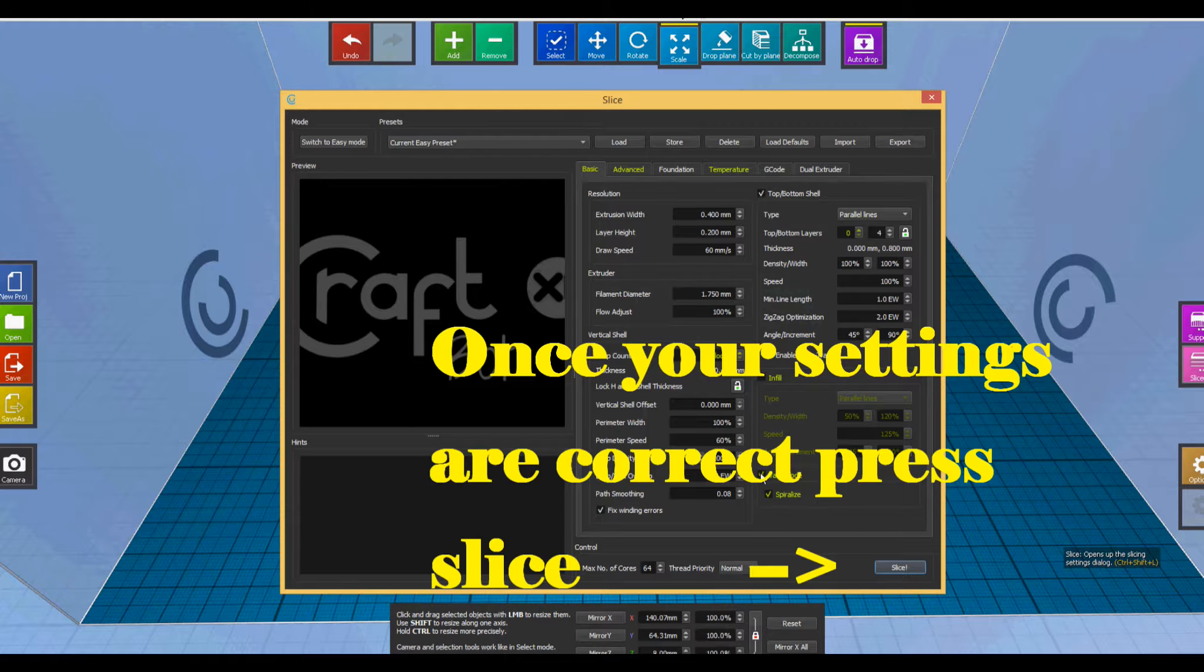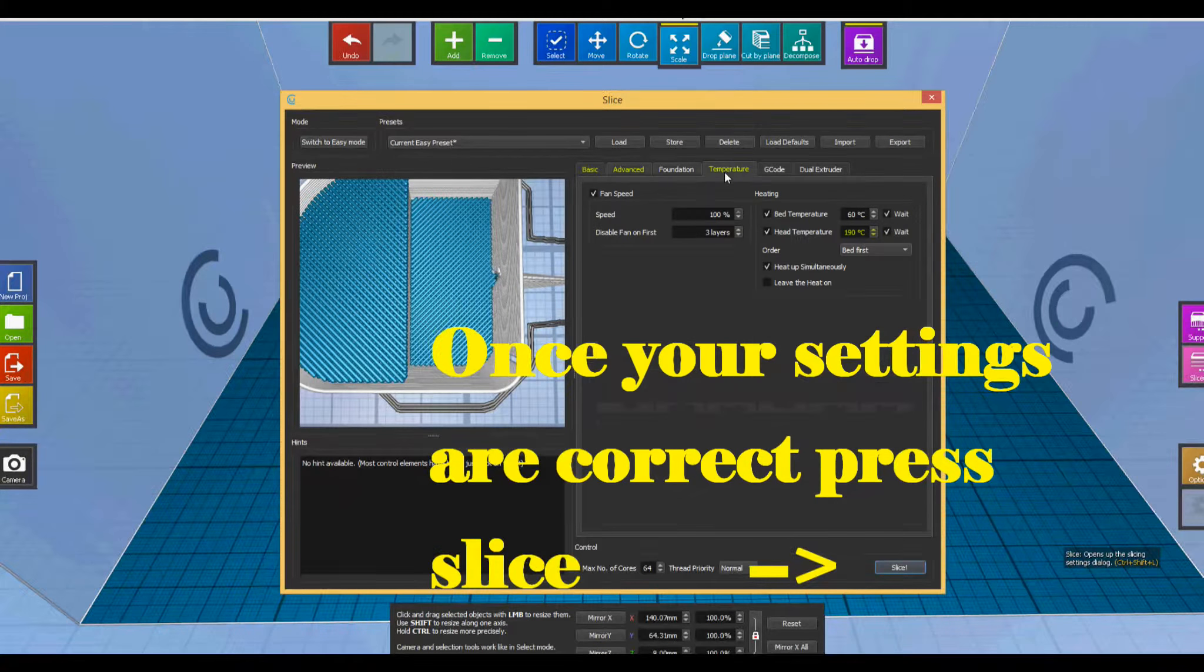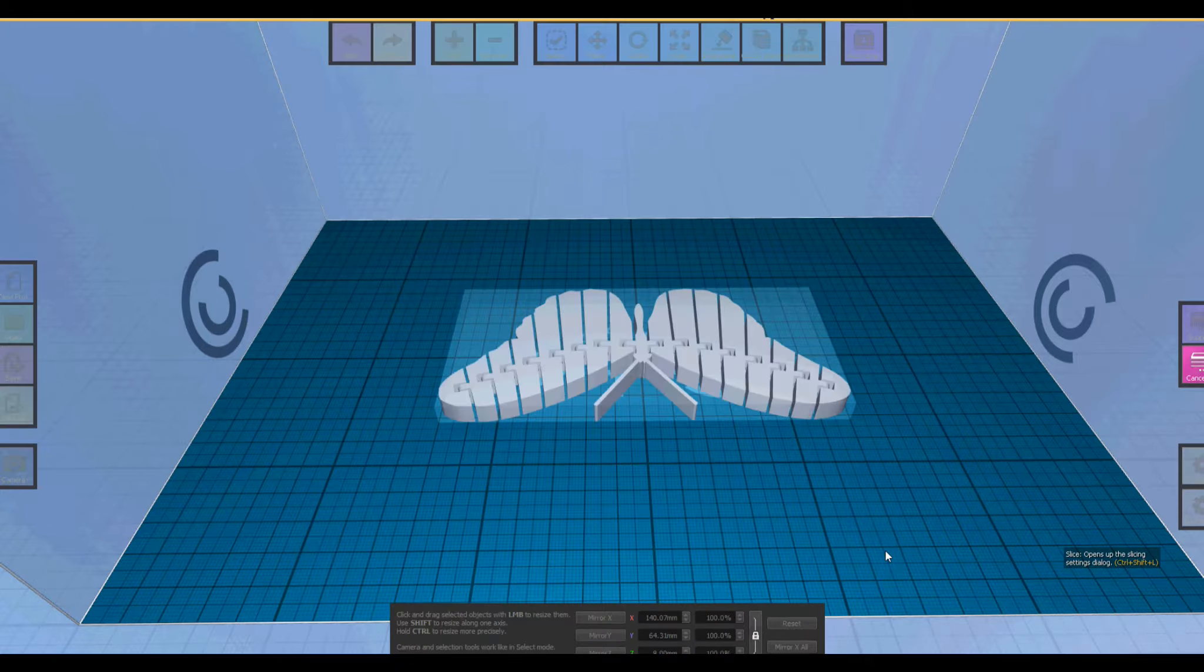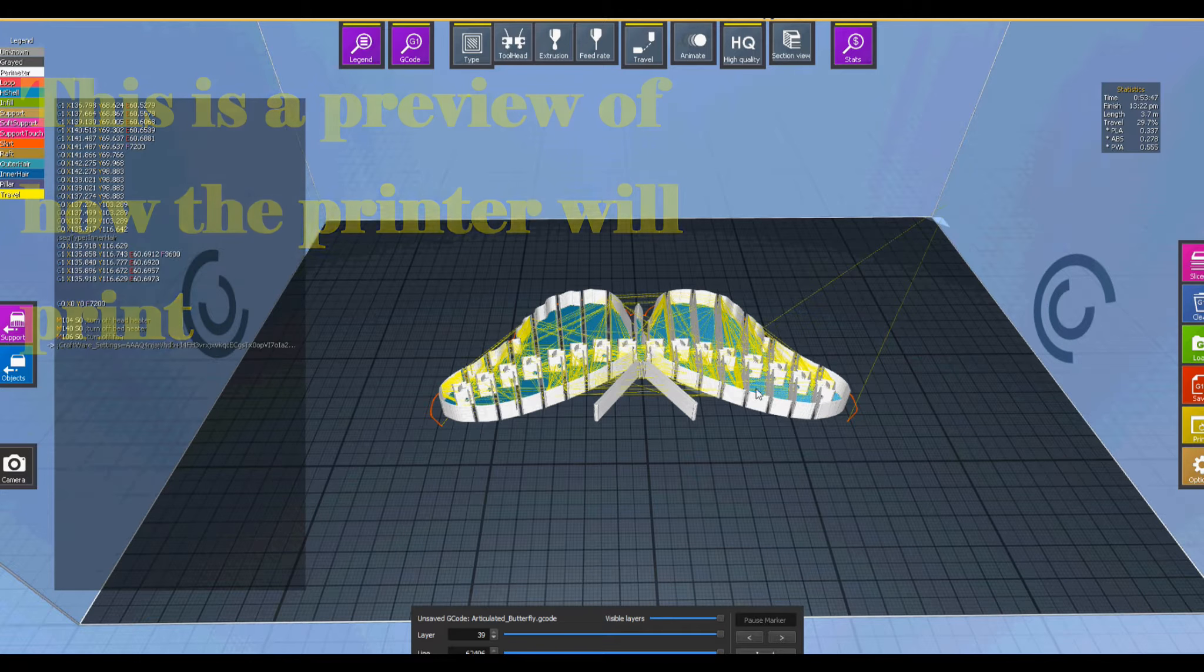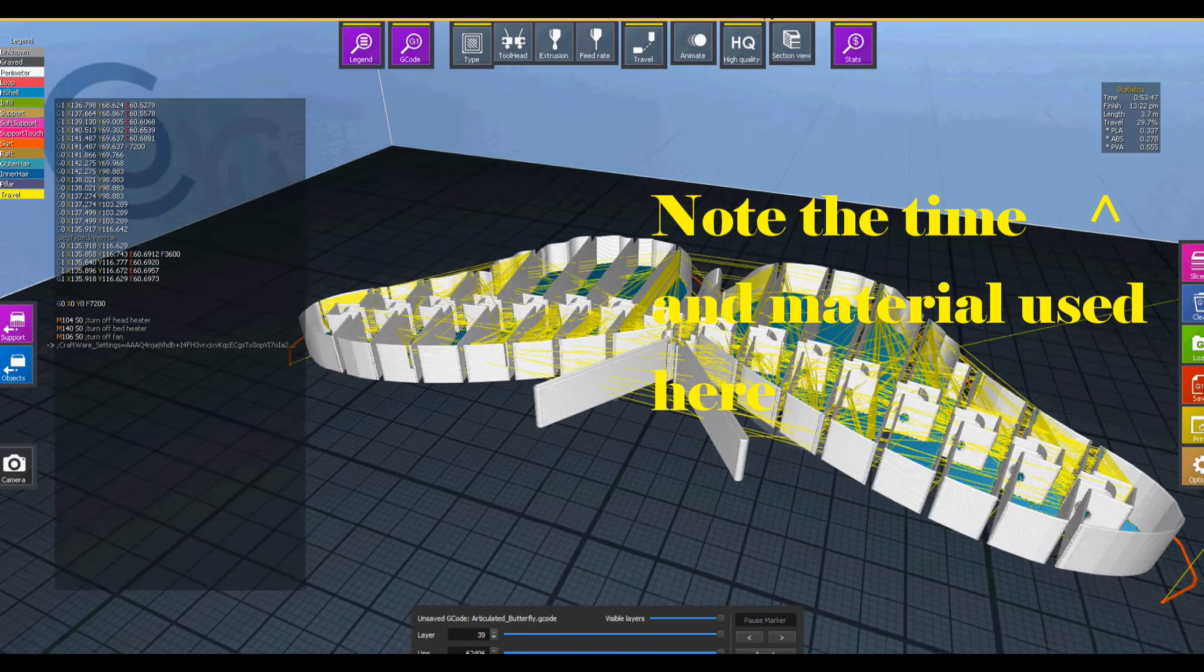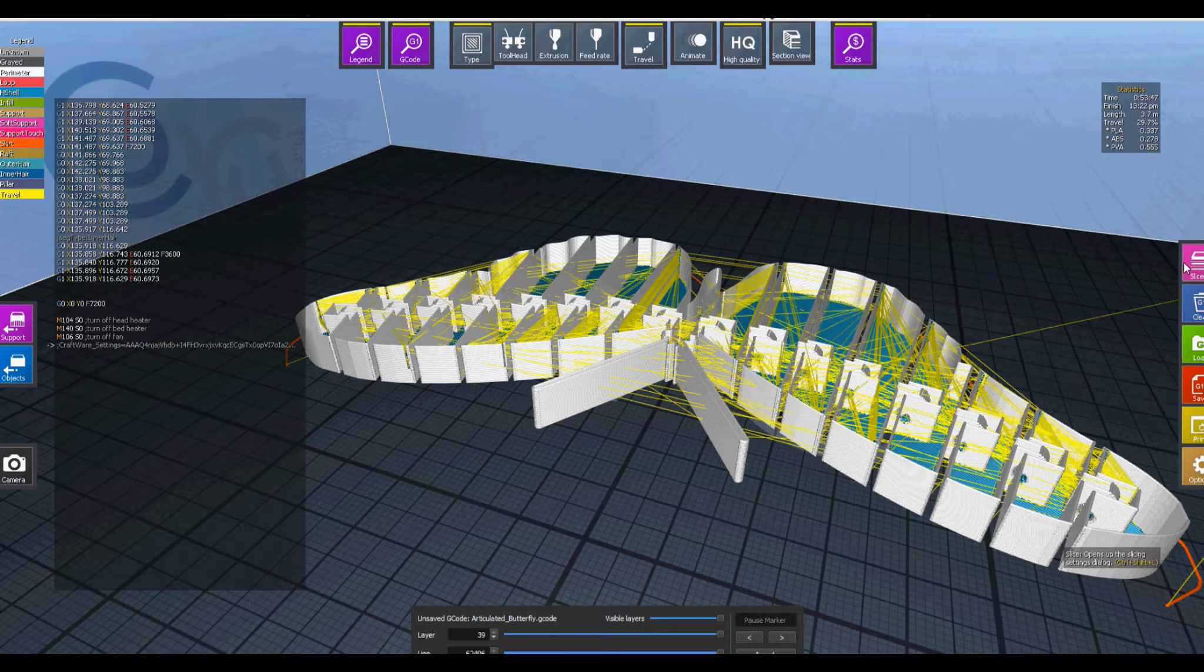Once you have your desired settings, click the slice button and the software will render how the 3D printer will print. Of important notice on this screen is the print time and the amount of material used in the top right corner.